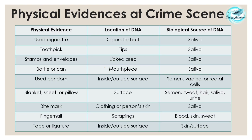Here a table is given showing physical evidences usually encountered at the scene of crime and the location of DNA — the potential biological source of DNA that we can extract from. For example, a cigarette butt is a location of DNA, and saliva is the biological source of evidence from it. Similarly, a toothpick yields saliva as a potential source of DNA. For stamps and envelopes, saliva used to apply the stamp can be analyzed to create a DNA profile.